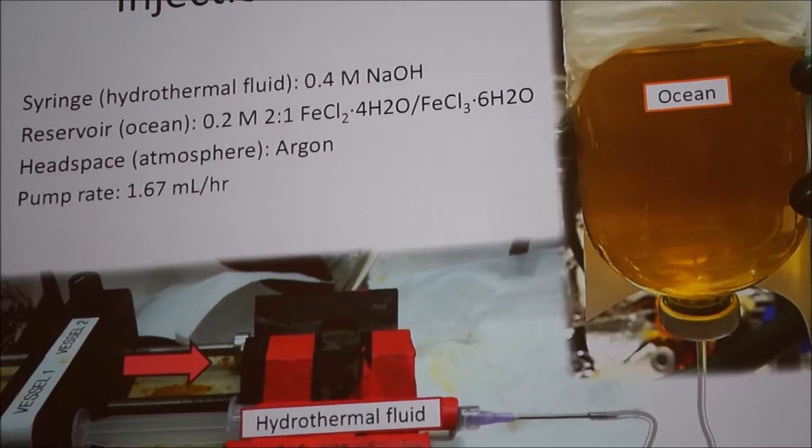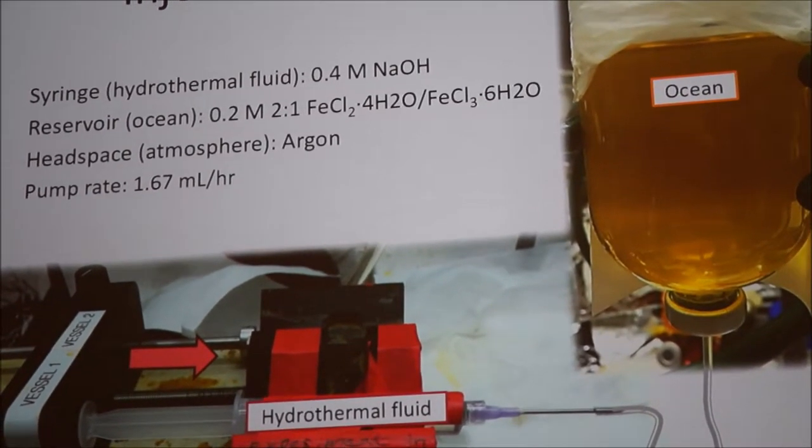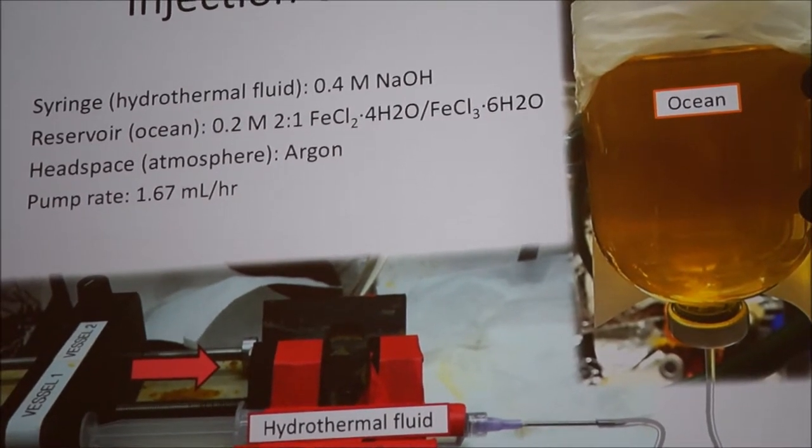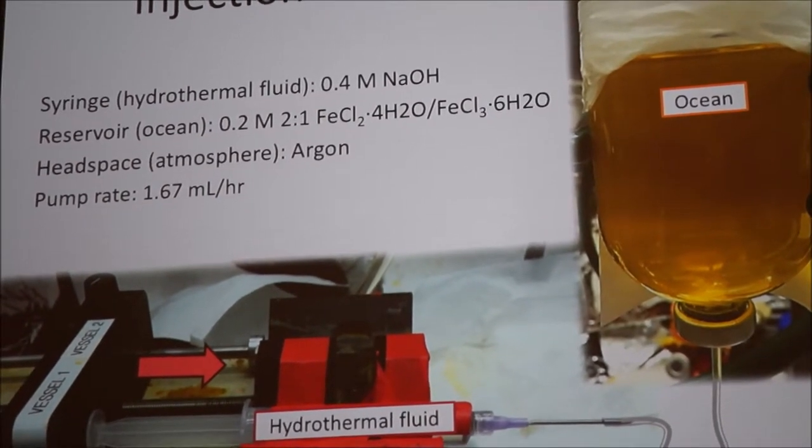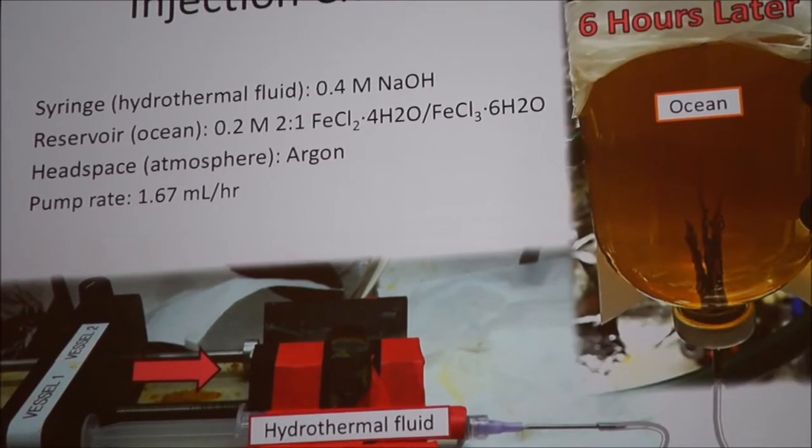Which is an alkaline fluid, a 1 molar solution of sodium hydroxide in a syringe that we injected at a constant rate into a reservoir of mixed ferrous and ferric chloride. And after six hours, you can see we get a precipitate.